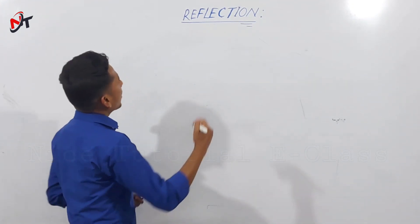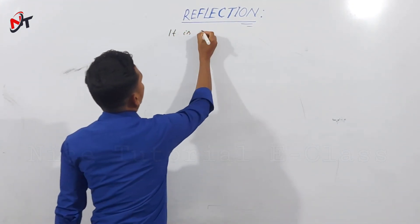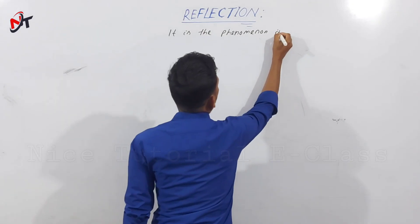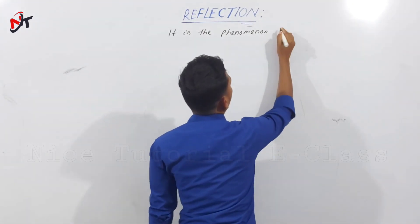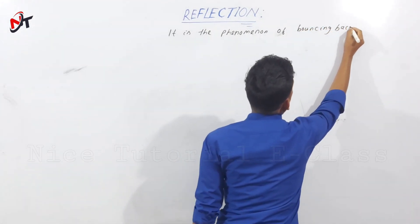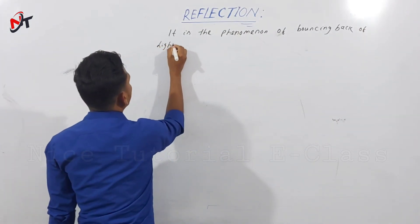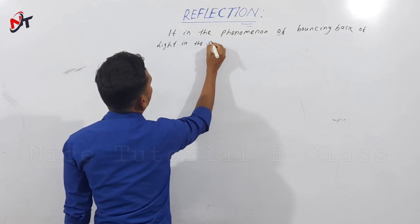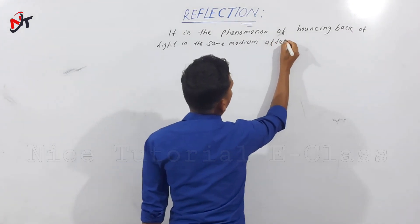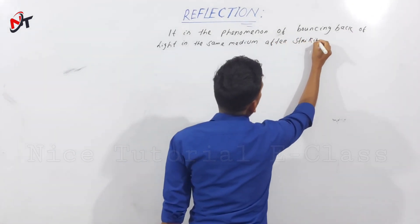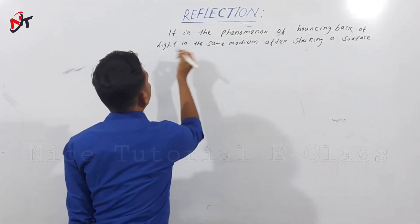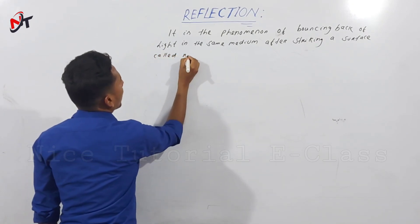Do we have any definition? Reflection is the phenomenon of bouncing back of light in the same medium after striking a surface. This phenomenon is called reflection.